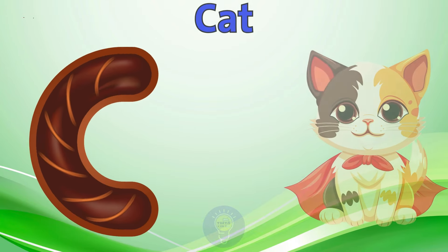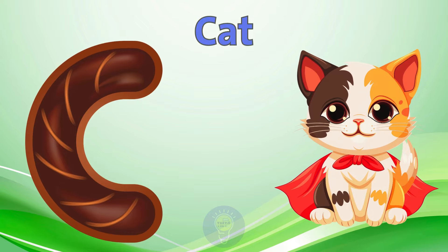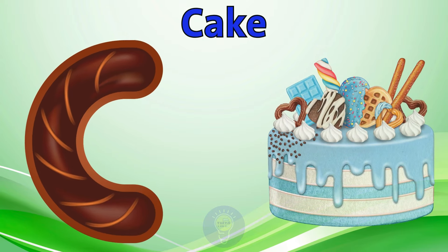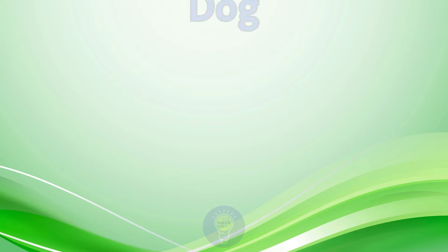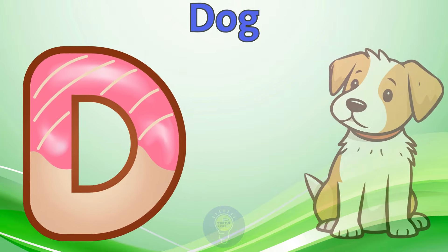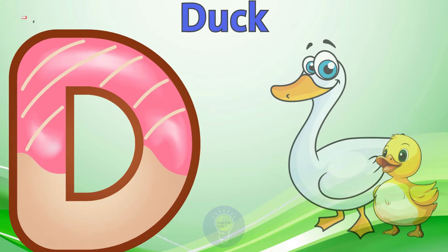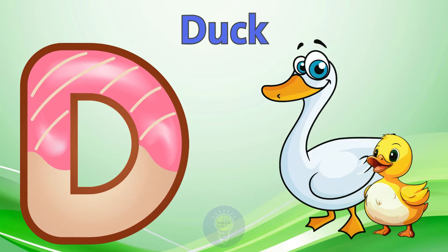C is for Cat. C, C. Cat. C is for Cake. C, C. Cake. D is for Dog. D, D. Dog. D is for Duck. D, D. Duck.